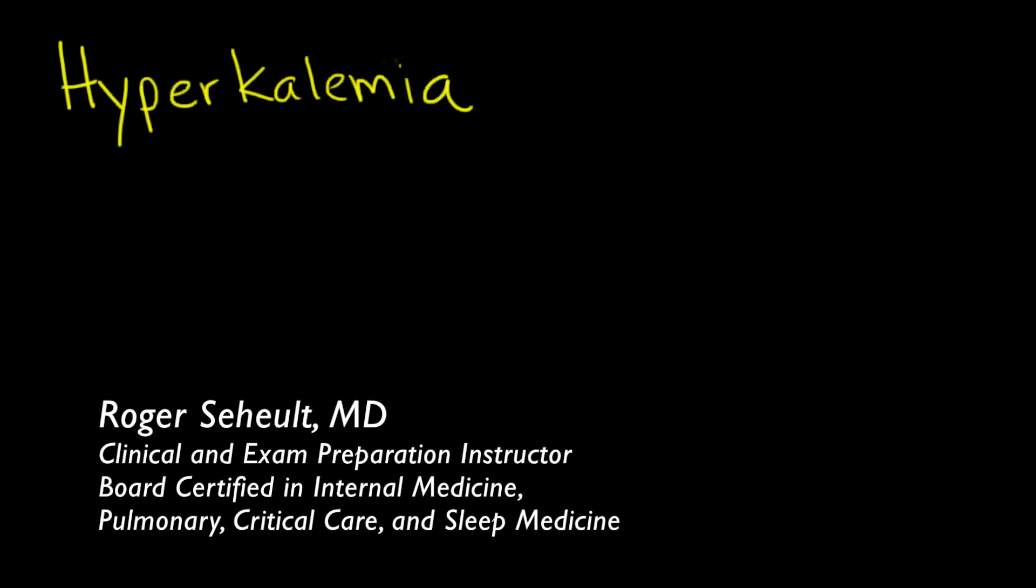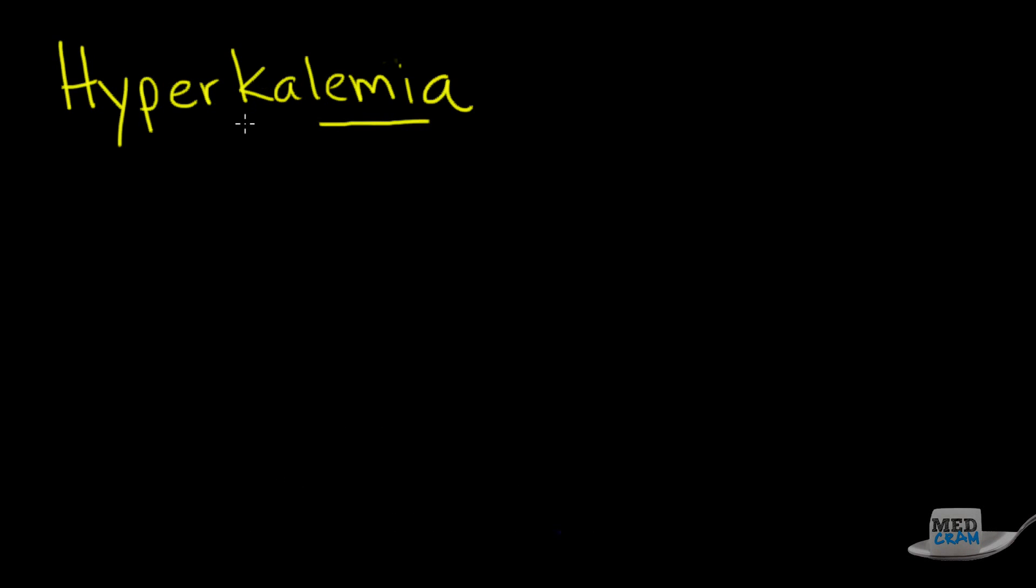Welcome to another MedCram lecture. We're going to talk about hyperkalemia. Hyperkalemia, like anything else that ends in emia, has to do with the blood, and the K from the periodic table has to do with potassium. So we're talking about high potassium in the blood, generally greater than 5.0. Of course, the higher it goes, the worse the symptoms can become.